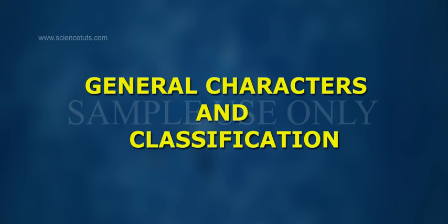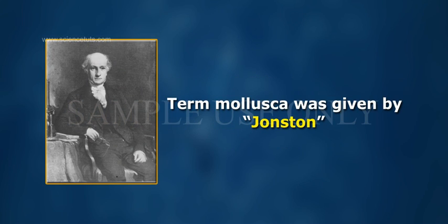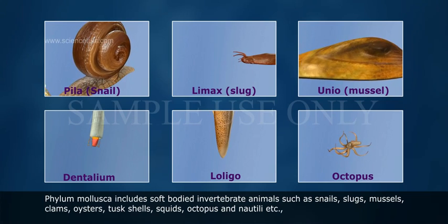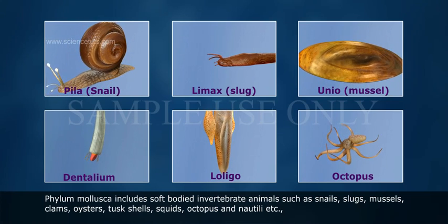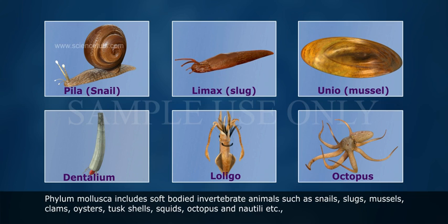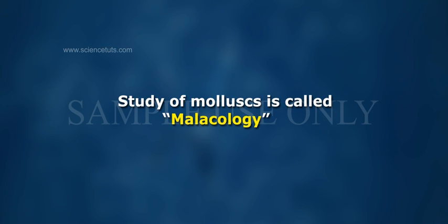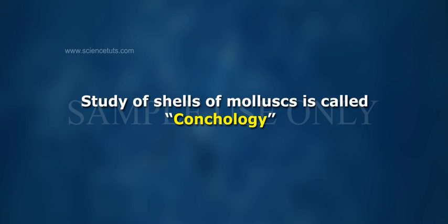Mollusca: General characters and classification. The term Mollusca was given by Johnston. Phylum Mollusca includes soft-bodied invertebrate animals such as snails, slugs, mussels, clams, oysters, tusk shells, squids, octopods, and nautili. Mollusca is the second largest phylum after Arthropoda. The study of molluscs is called malacology, and the study of their shells is called conchology.